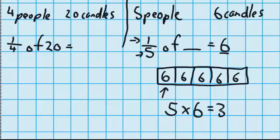5 times 6 is 30. So to finish off our question up here, 1 fifth of 30 equals 6.